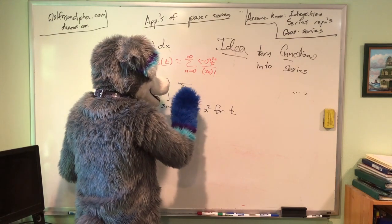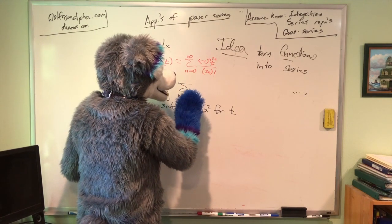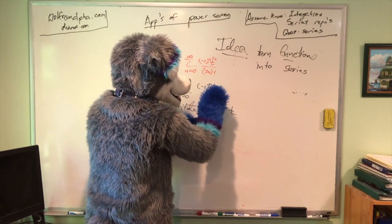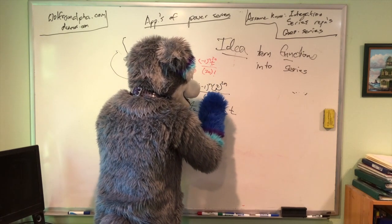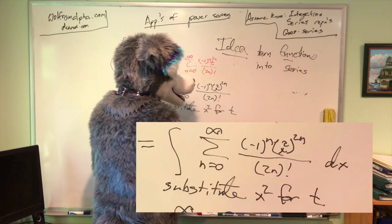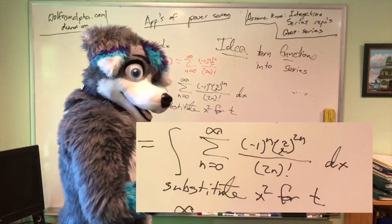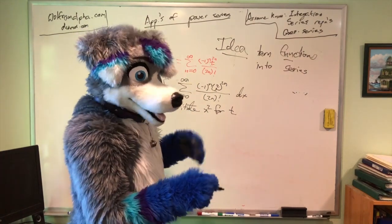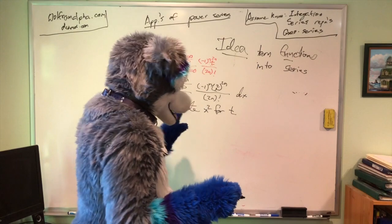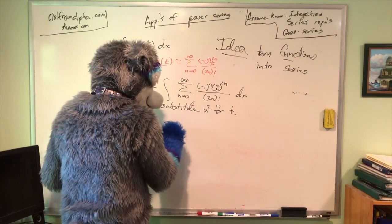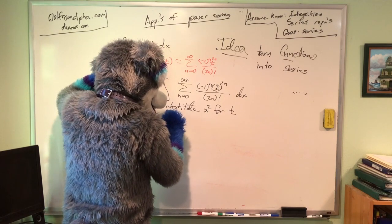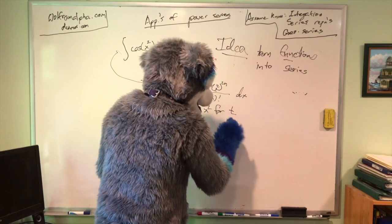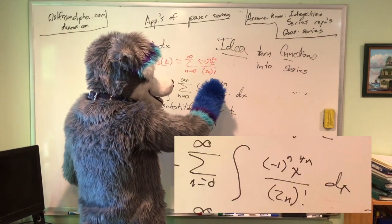Then you get the sum from n equals zero to infinity of negative one to the n, substituting x squared in for T, so you have x squared to the 2n over the 2n factorial, dx. A wonderful property of power series is you can interchange the integral and summation sign within the radius of convergence, so we're looking at the sum from n equals zero to infinity of the integral of negative one to the n times x squared to the 2n.